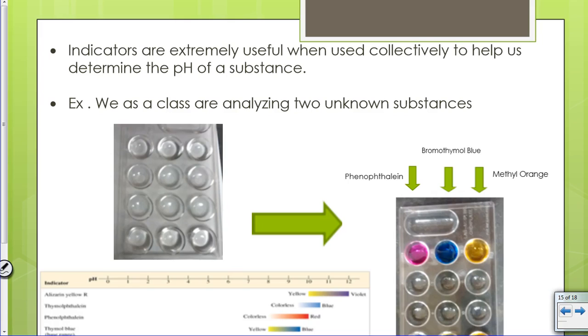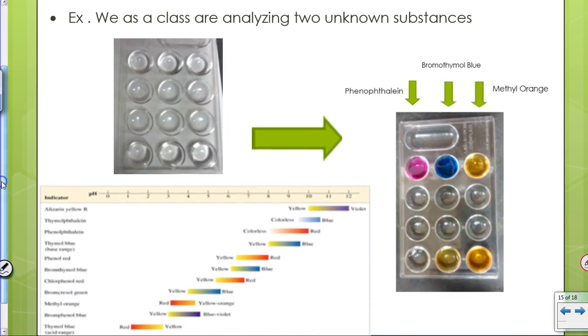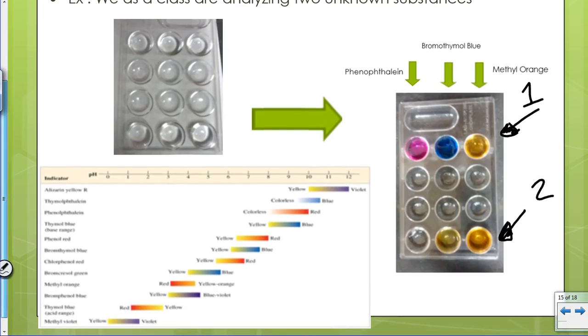So if we as a class are analyzing two unknown substances that we see on the left, you can clearly see without our indicators, we end up seeing these are our solutions. They're colorless. So you can't see them on the black benchtop. You actually can't tell them from the empty dish. Now, if we look and we scroll down a little bit, we've added our indicators as shown by these wonderful arrows at the top. We have our two unknown solutions going across the sides. That's one, that's two. And we've used phenolphthalein on the far left, bromothymol blue in the middle, and methyl orange on the right.